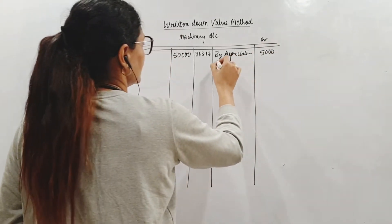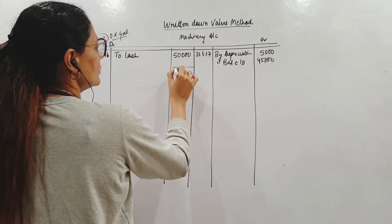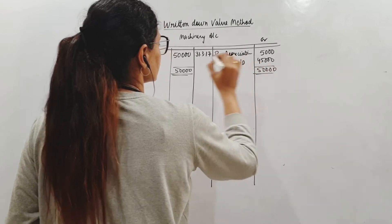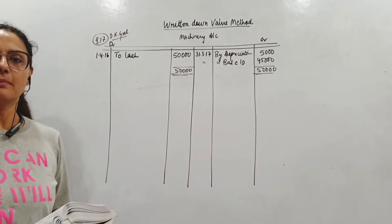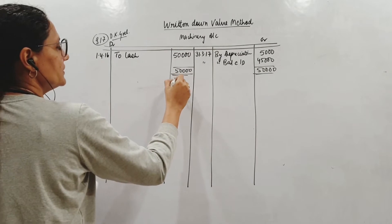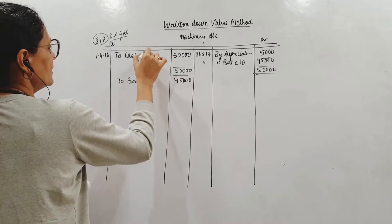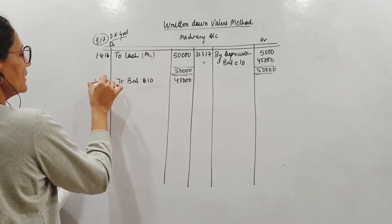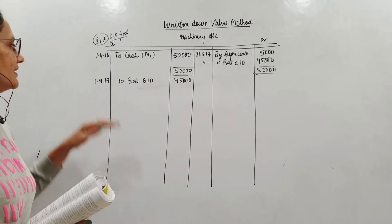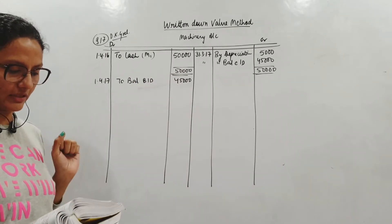So here we are making the machinery account. We will write the first entry when we are purchasing it through cash. We are purchasing machine worth 50,000. And in this year there is no other transaction. So we straight away depreciate the machine on 31st March 17. By depreciation which is the first and that has been used for the full year. Rate of depreciation is 10%, 5,000. By balance carried down 45,000. Please do close this. Do not forget to total it up and close the account.